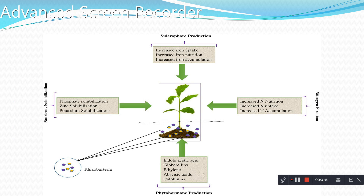This is a simple diagrammatic representation of bio-inoculants used in a plant. The first one is cytospore production, i.e. increased ion uptake, increased ion nutrition, and increased ion accumulation. By using these bio-inoculants, this process will take place. Then, increase in N-nutrition, i.e. nitrogen, and increased nitrogen uptake and increased ion accumulation.